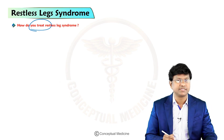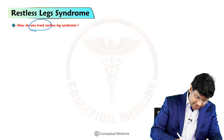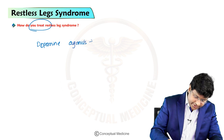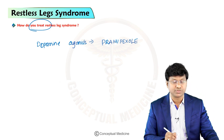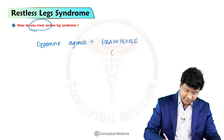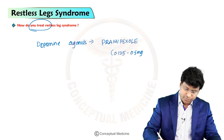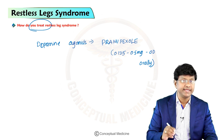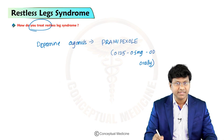How do you treat patients with Restless Leg Syndrome? Therapy is with non-ergot dopamine agonists. These include pramipexole, given at a dosage of 0.125 to 0.5 milligrams once daily orally — that is the dosage of pramipexole, which is a non-ergot dopamine agonist.